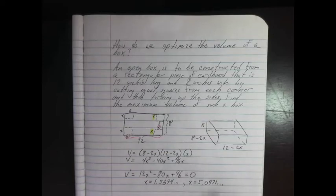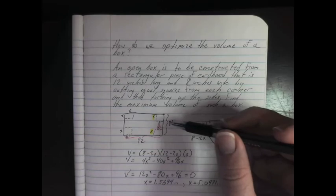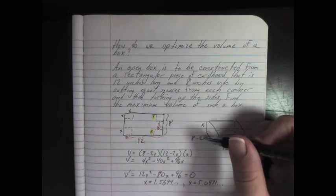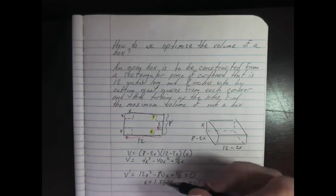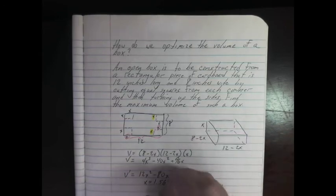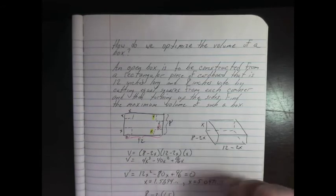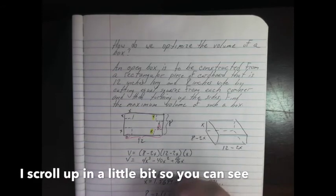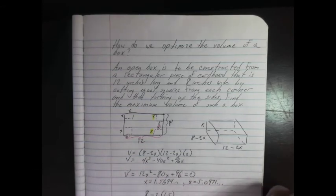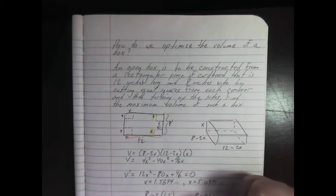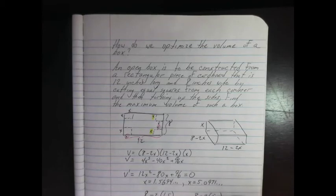Now, one of these is a totally reasonable answer, the other is not. If we look up here, one of our sides is 8 minus 2x. Well, this is about one and a half, so if we plugged in 8 minus 2(1.5), just for the heck of it to make it easy, well that's going to be 8 minus 3, that's 5. That totally works, it's positive, it would mean our box has a width of 5 inches. However, suppose I try the second one.